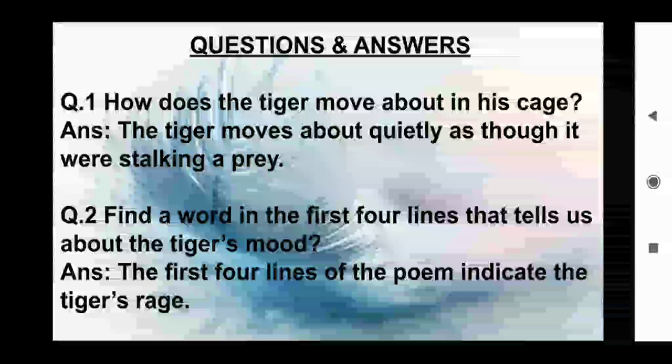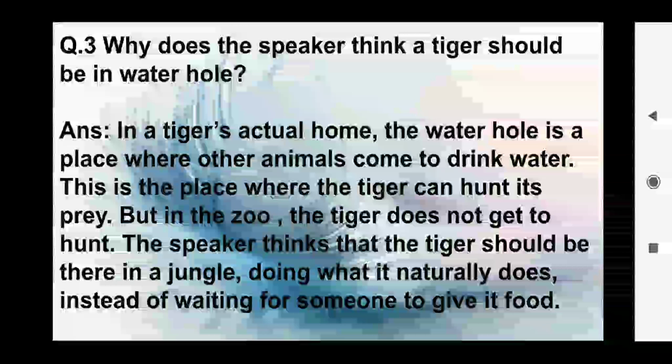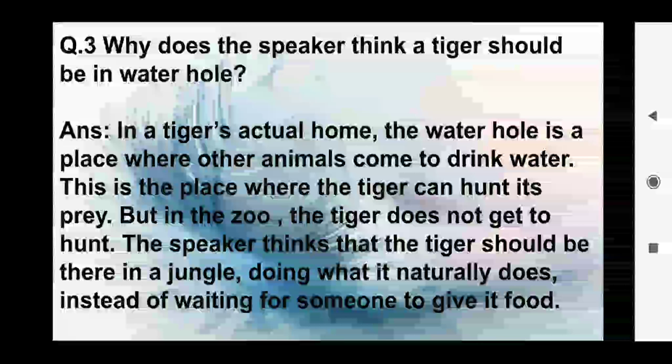Question 2: Find a word in the first four lines that tells us about the tiger's mood. Answer: The first four lines of the poem indicate the tiger's rage. Question 3: Why does the speaker think a tiger should be in a water hole?